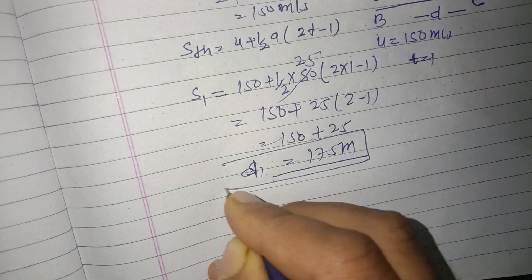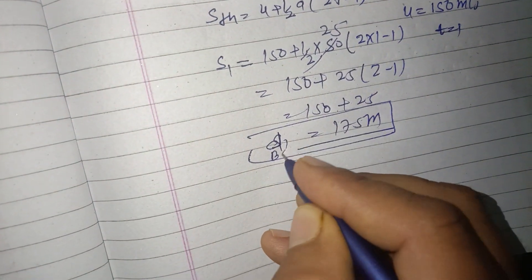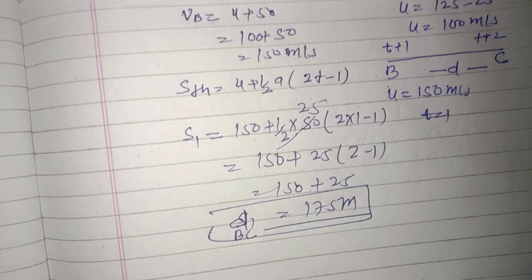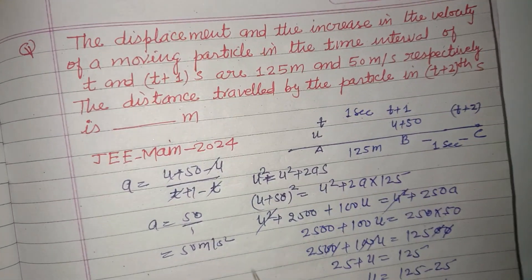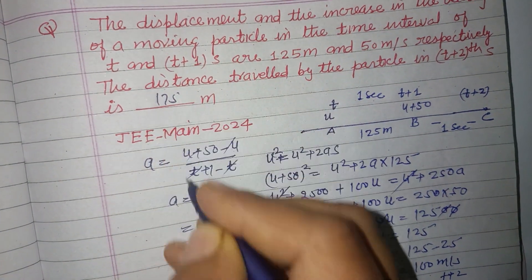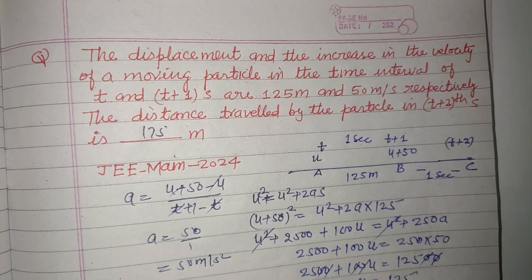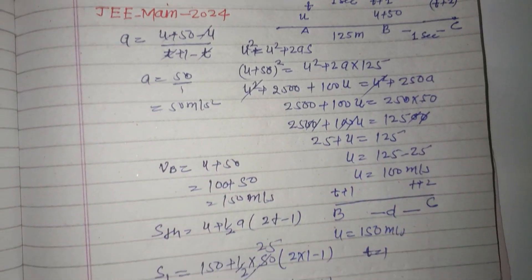The distance in the interval B to C is 175 meters. So the answer to this question is 175 meters. I hope you got it. Please like the video, subscribe to the channel, thanks for watching.